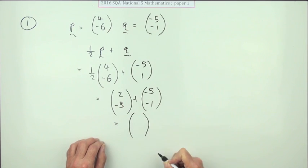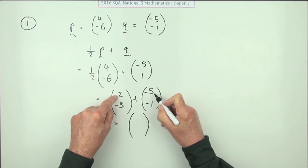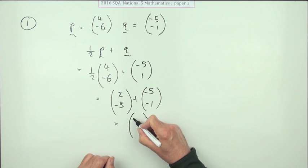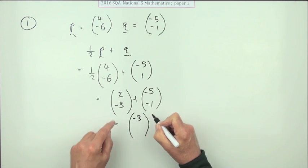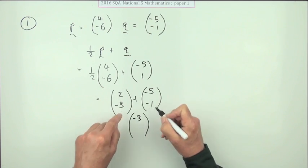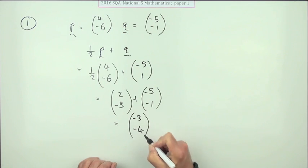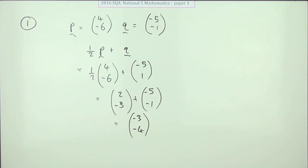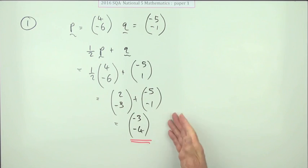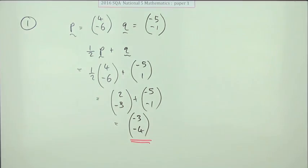And then finish it off: 2 take away 5 is negative 3; negative 3 and negative 1 is negative 4. That wasn't too bad to start you off.